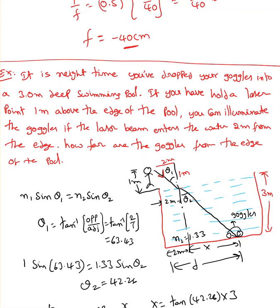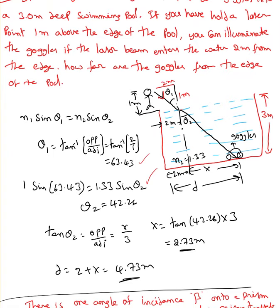That gives us theta1. When the light enters the water, it refracts — moves away from the normal — giving theta2. Applying n1 sin(theta1) = n2 sin(theta2), with n2 for water = 1.33. I find theta1 using the right-angle triangle: tan(theta1) = 2/1, so theta1 = 63.43 degrees. From Snell's law I find theta2, then use tan(theta2) = x / 3 to find x.